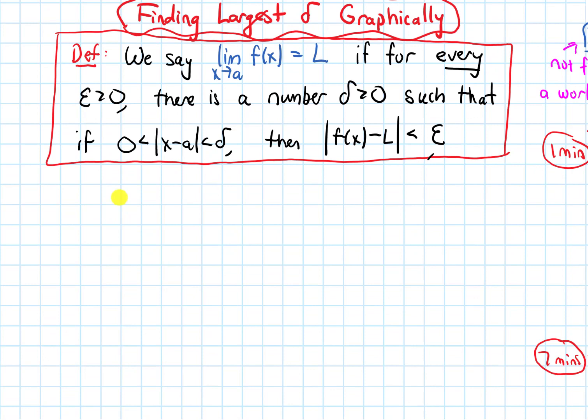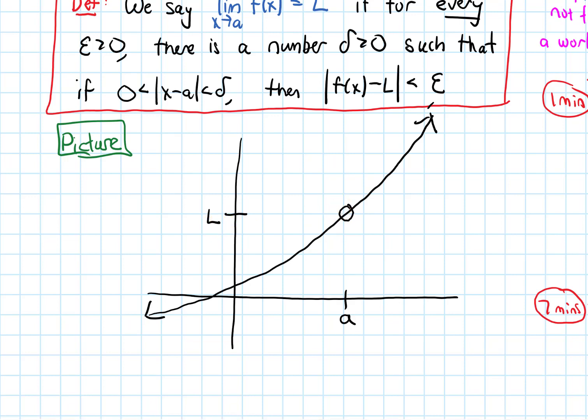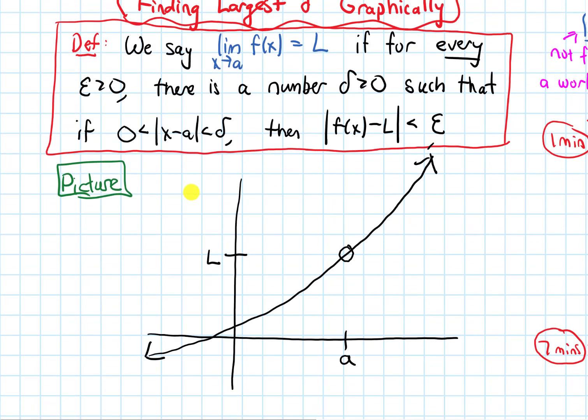So let's recall graphically what this is describing. So let's draw a picture. I'm going to draw some axes, and then I'm going to draw a curve. So let's say the curve looks something like this, and then somewhere on the x-axis, I'm going to label a point a. And on the graph where a is, let's just put a hole there. And looking at the graph, I'm going to make the y value at that hole L.